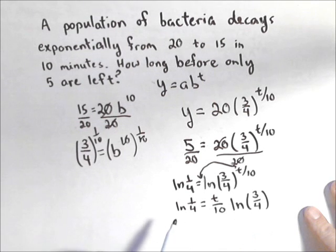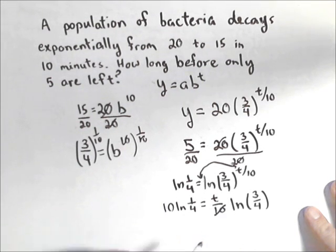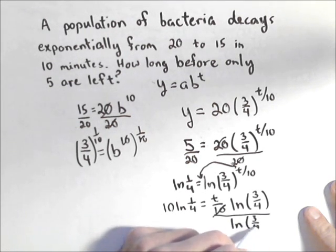Not much left to do to solve. I'm gonna multiply both sides by 10, so that'll cancel the 10 out over here, and divide both sides by ln of 3 fourths.